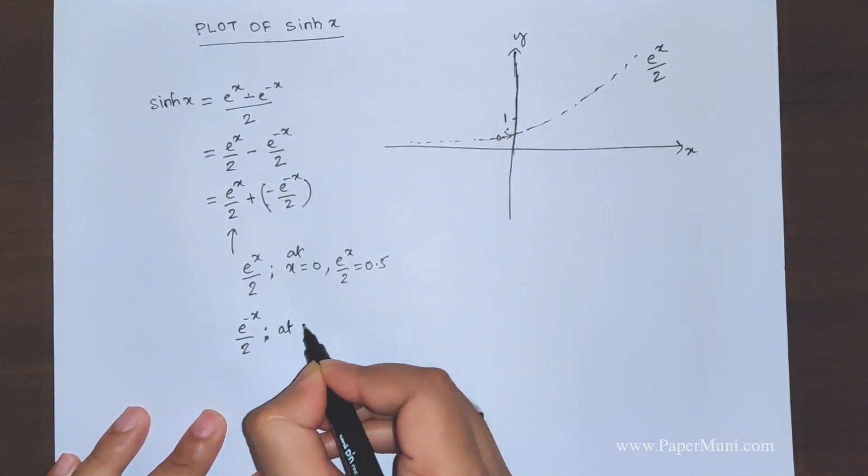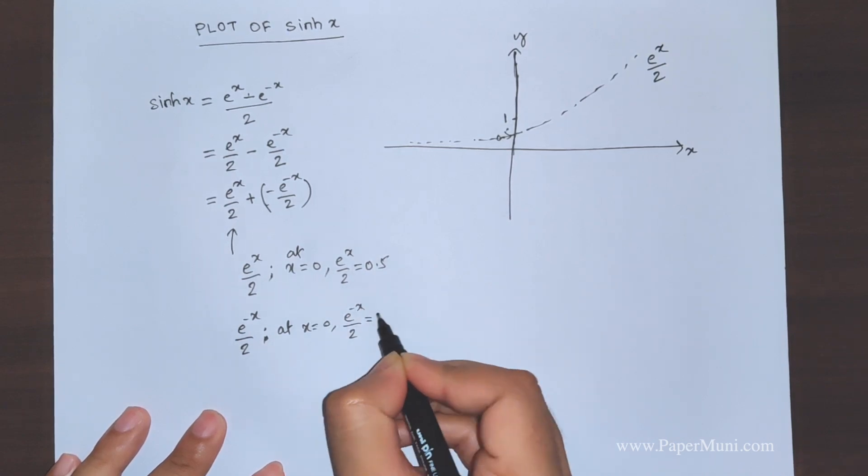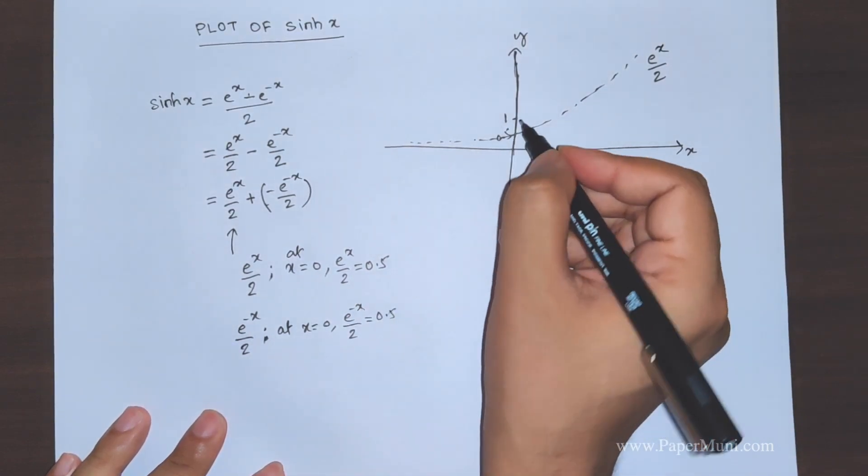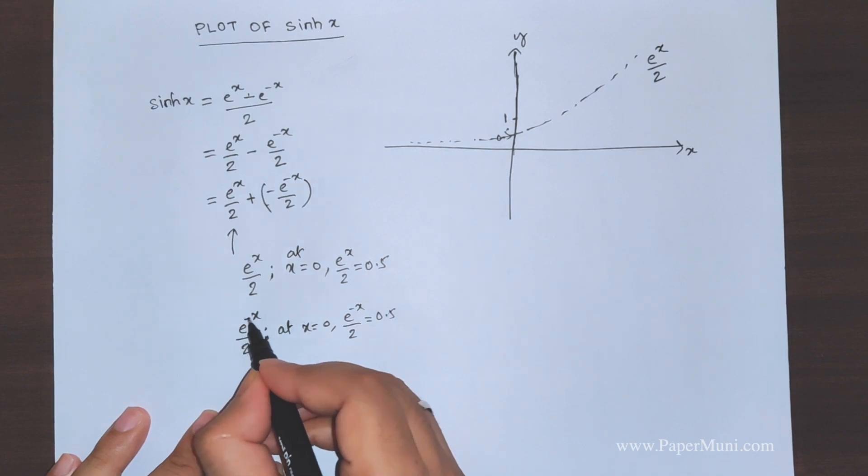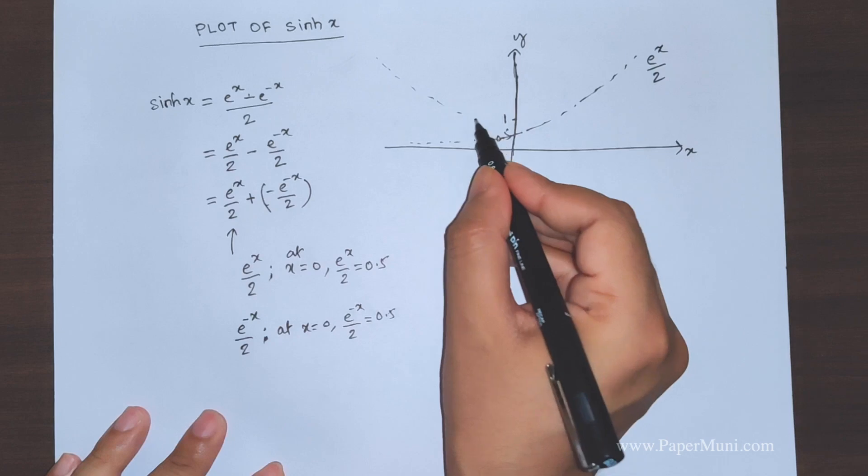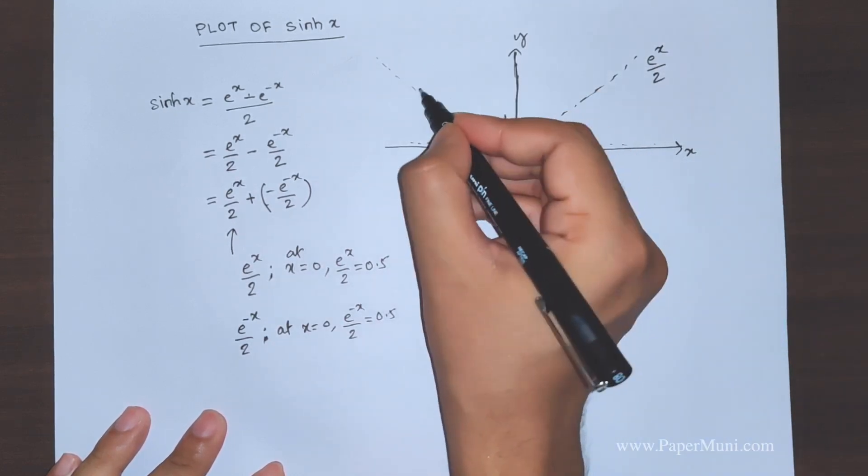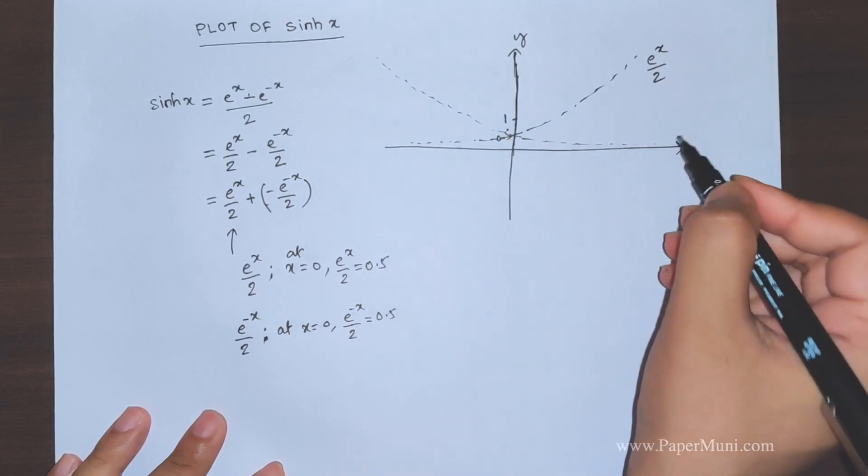If we look, this graph at x equal to 0, this e to power minus x by 2 is again 0.5, but this is an exponential decaying graph. So this will be like this, it will cross through 0.5 and it will decay as we keep on increasing the positive values of x.